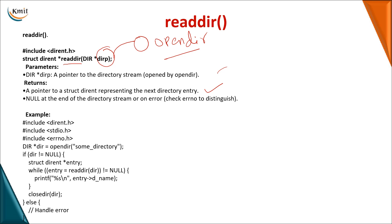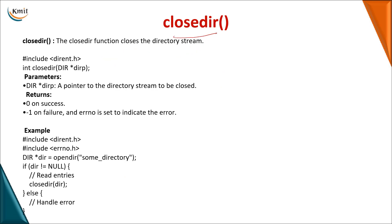In a program, if the DIR pointer is not equal to NULL, it means you are able to read the next directory entry available, and you print the name of that entry. Otherwise, you close the directory. To close a directory, use closedir and specify the pointer returned when opening the directory. On success closedir gives a value of 0, otherwise it returns -1.